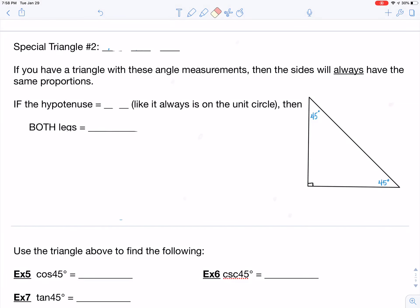Hey folks, still in this section dealing with special triangles, and so special triangle number two is going to be the 45-45-90 triangle.